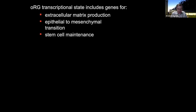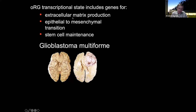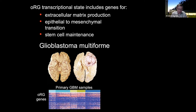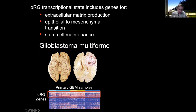Another unexpected disease insight came from the fact that outer radial glial genes fit into modules of gene expression specific for extracellular matrix production, epithelial-to-mesenchymal transition, and niche formation for stem cell self-renewal. All of these pathway genes had been previously described as enriched in glioblastoma multiforme — an untreatable, aggressive brain tumor mostly of adults. We examined samples from our neurosurgical colleagues, and for the most aggressive glioblastomas, we found the pattern of gene expression we had come to recognize as representing outer radial glial cells.